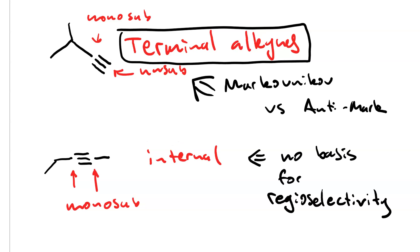With the internal alkynes, however, since both sides are monosubstituted, there is no basis for regio-selectivity and the words Markovnikov and anti-Markovnikov have no meaning.